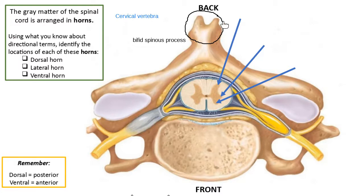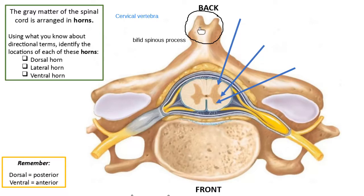Imagine standing in front of someone and staring straight through them — what you'd see first is the front part of the vertebral column, and the spinous process is on the back side. Always, when looking at a model showing the spinal cord inside a vertebra — whether it's a cervical vertebra with its bifid spinous process or a thoracic or lumbar vertebra with a regular spinous process — the spinous process is always on the posterior side. This cervical vertebra has that bifid spinous process with two parts.